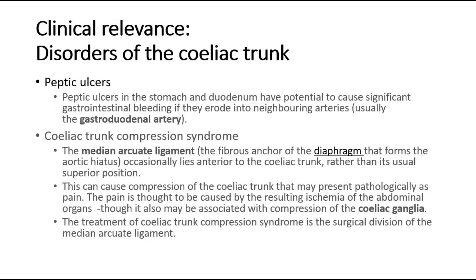For clinical relevance, the disorders of the celiac trunk. Peptic ulcers in the stomach and duodenum have the potential to cause significant gastrointestinal bleeding if they erode into neighboring arteries, usually the gastroduodenal artery.